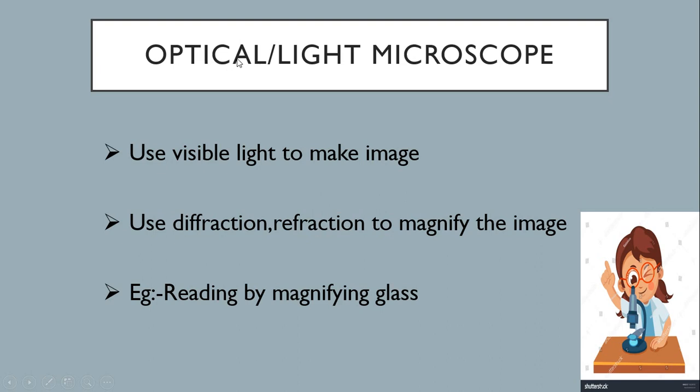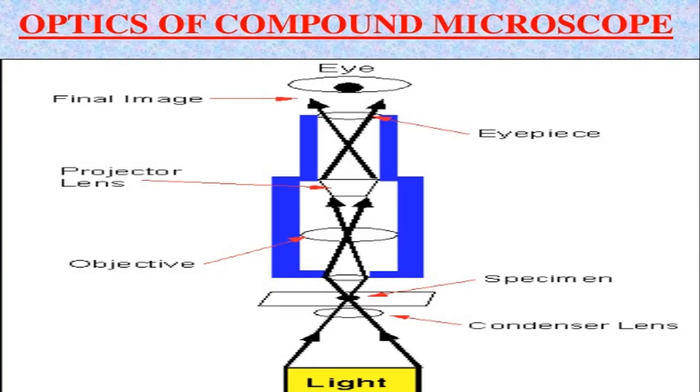Now optical microscopy, light microscope or it is also called as compound microscope. It uses visible light to make an image. And use of diffraction, refraction is used to magnify the image also. So what is the good example of optical microscope? Reading by magnifying glasses. This is the example of optical microscope.